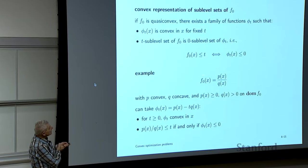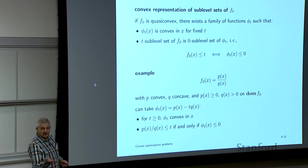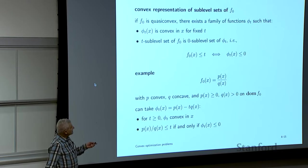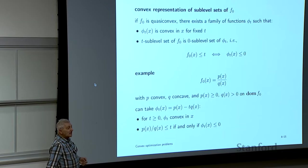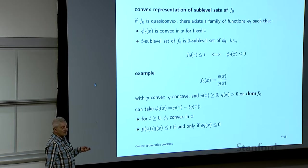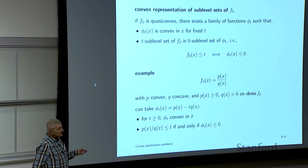To verify quasi-convexity, look at the sublevel set: when is P(x)/Q(x) ≤ T? If T is negative, the sublevel set is empty, which is convex. For T positive, P(x)/Q(x) < T if and only if P(x) − T·Q(x) ≤ 0. This is a convex function of x provided T is positive, because Q is concave, T·Q is still concave, and subtracting gives a convex sum.